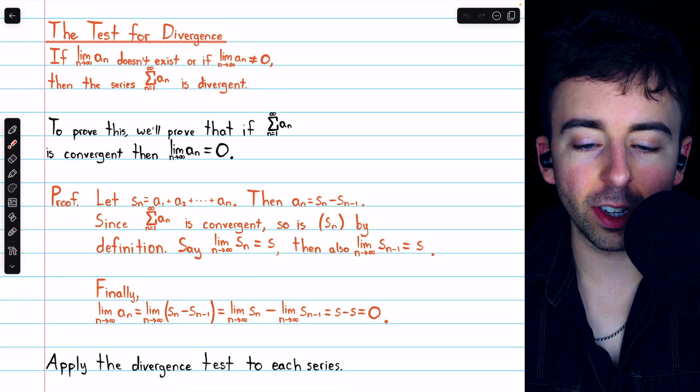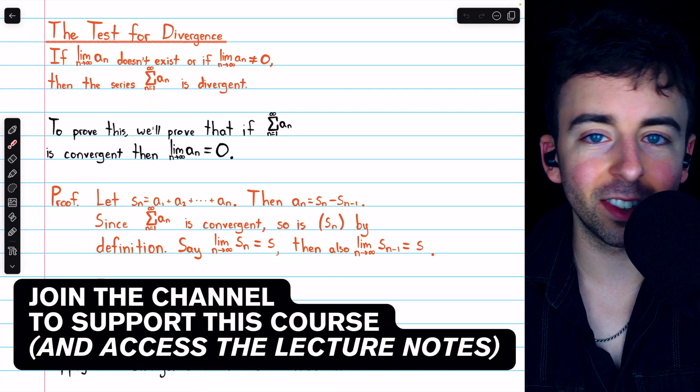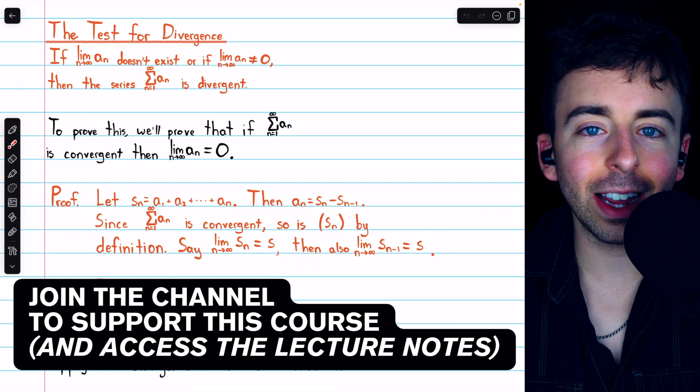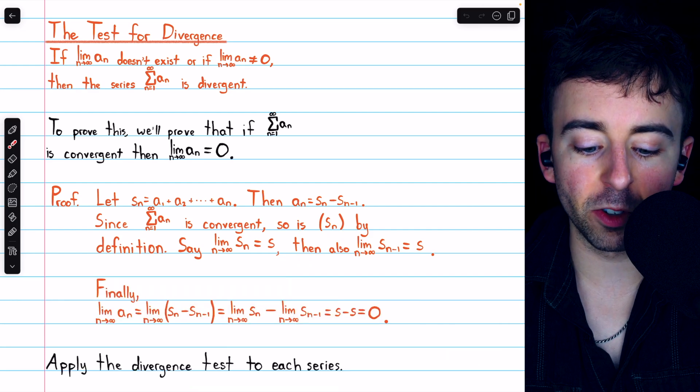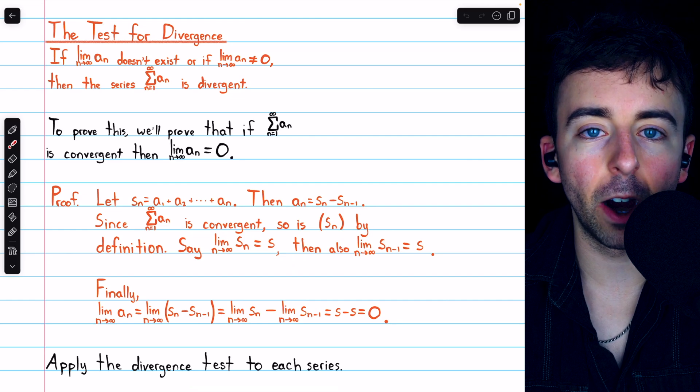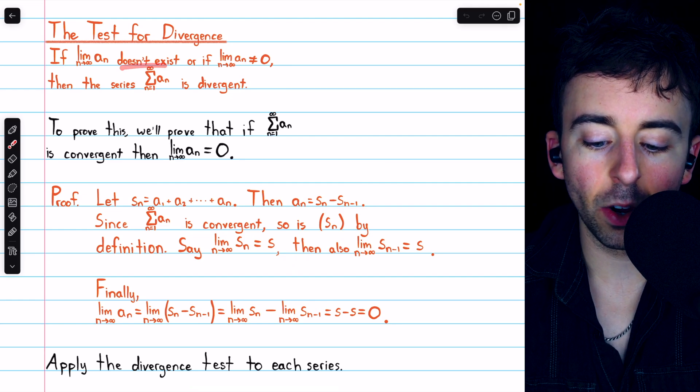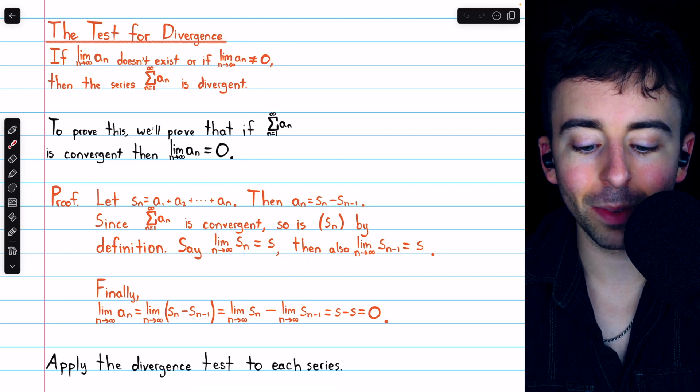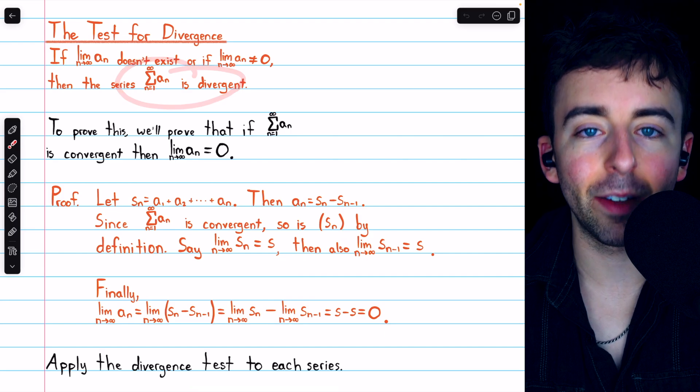This here is the test for divergence, also just called the divergence test. It's a quick way to check if some series are divergent. If the limit of the terms of the series is not equal to zero, whether the limit doesn't exist or it's just some non-zero number, then the series must be divergent.